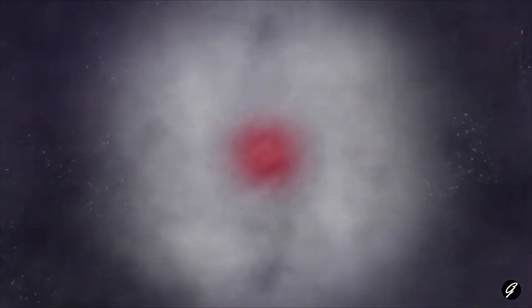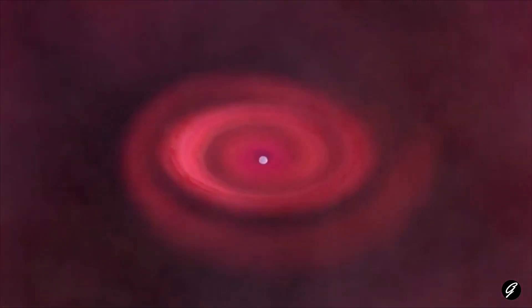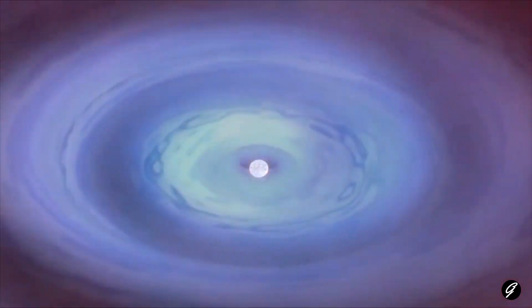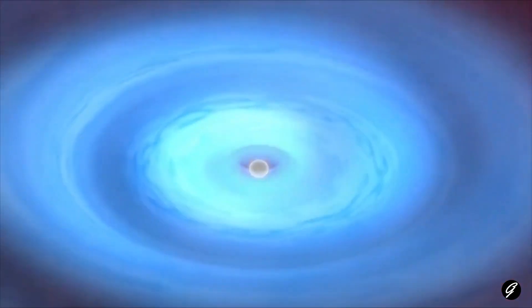At this point, the star's core has collapsed to a point where it is so dense that its gravity is incredibly strong. The core continues to collapse until it becomes a region of space where gravity is so strong that not even light can escape it.